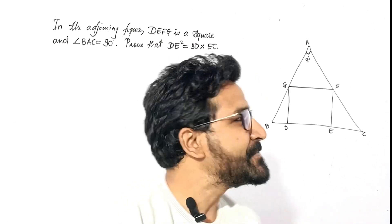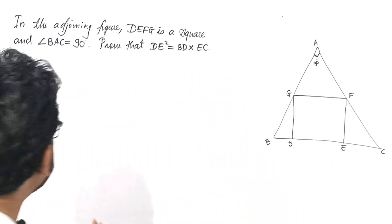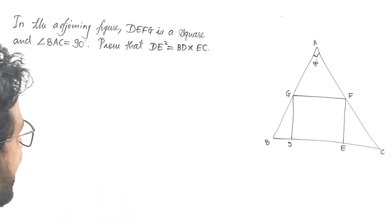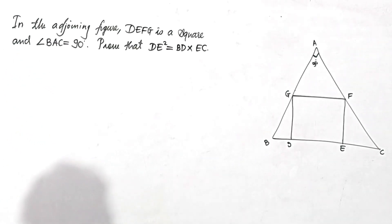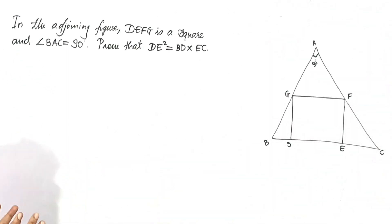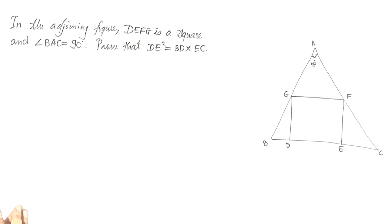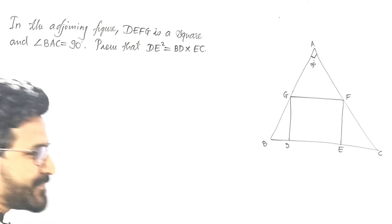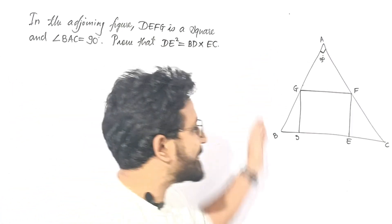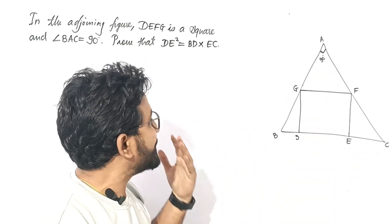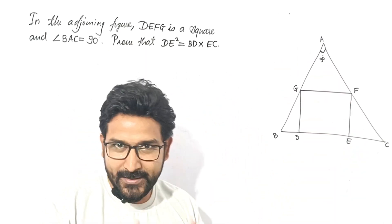So the given question here is: In the adjoining figure, DEFG is a square and angle BAC is equal to 90 degrees. Prove that DE squared is equal to BD into EC. So this is the given diagram, and here we will prove using the triangles.